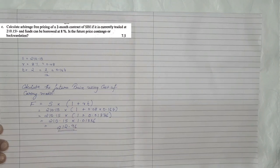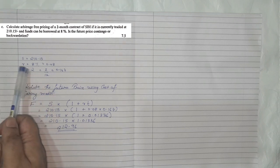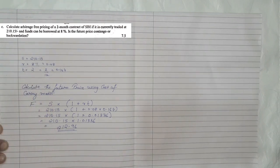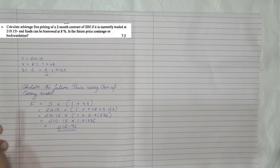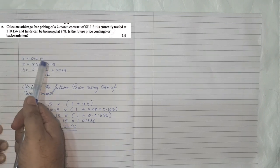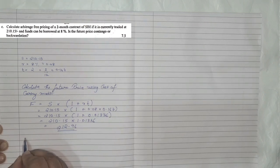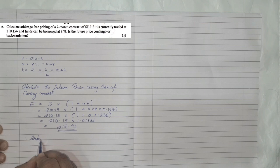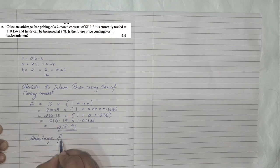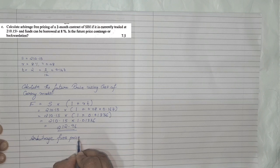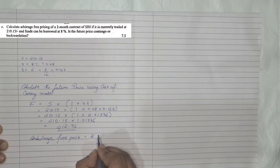This calculated price is nothing but the arbitrage free price. Our spot was 210.15. Note that they have only asked us to find the arbitrage free pricing — they did not ask for the arbitrage profit or loss. If they had asked for profit or loss it would be 212.96 minus 210.15. Therefore, the arbitrage free price is Rs. 212.93.